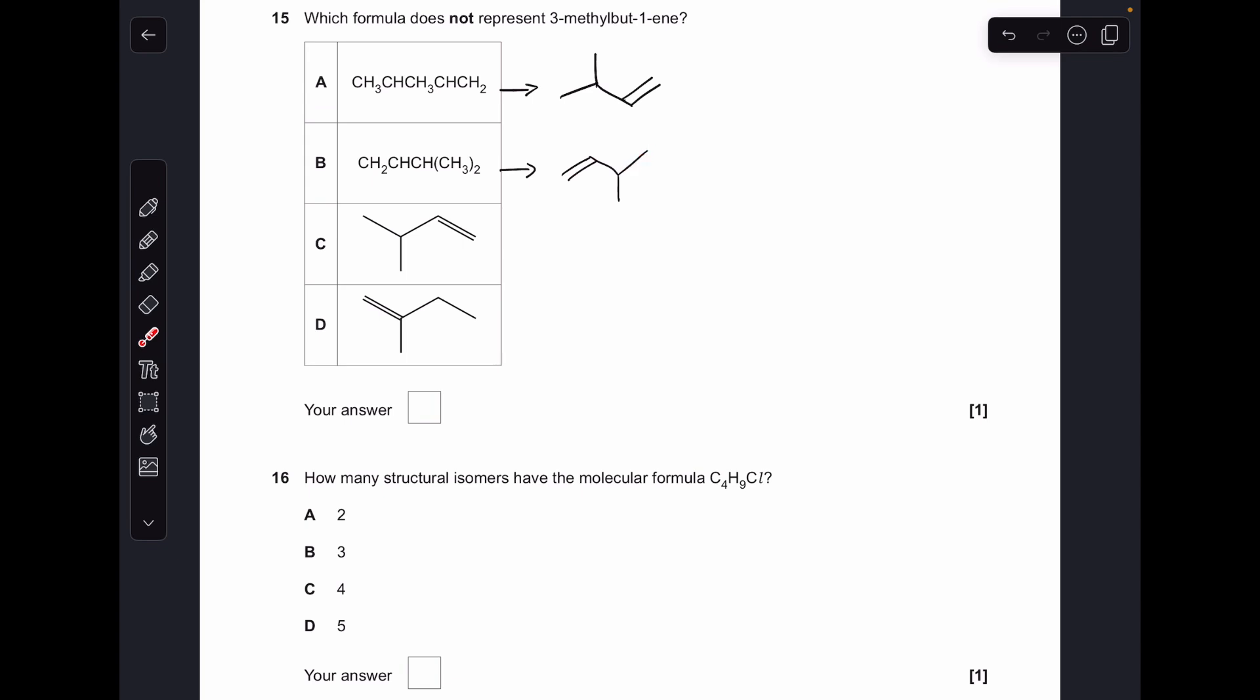Well this one is, you've got one, two, three, four—there's but-1-ene, 3-methyl. This is the same just turned the other way around. This is also 3-methyl but-1-ene. So this must be the answer—it is but-1-ene but it's 2-methyl but-1-ene, so D was the answer.